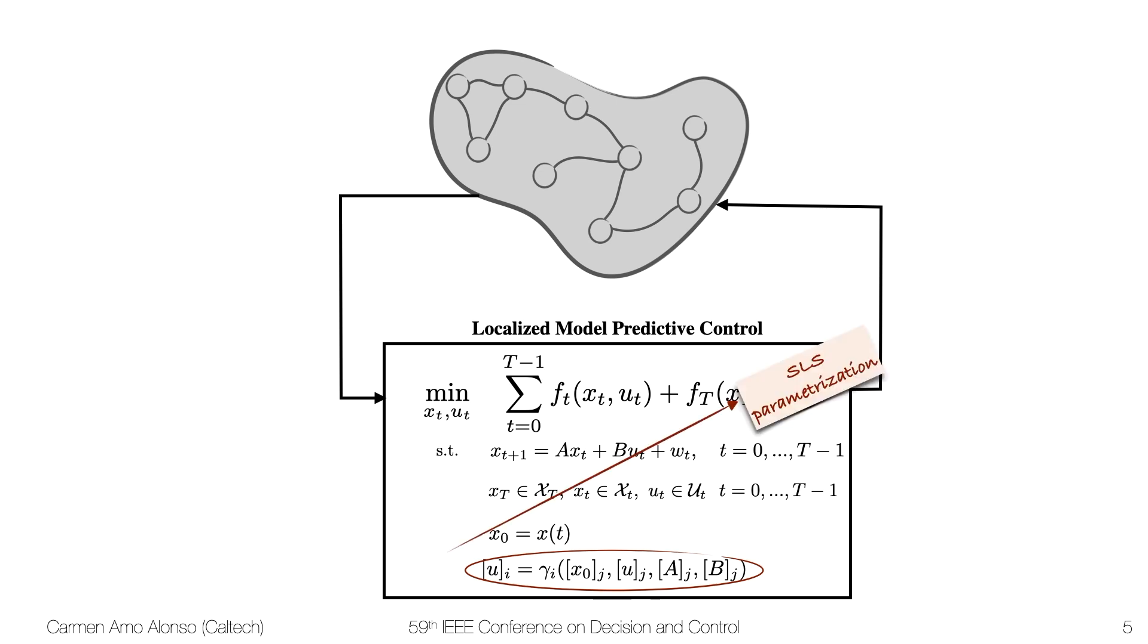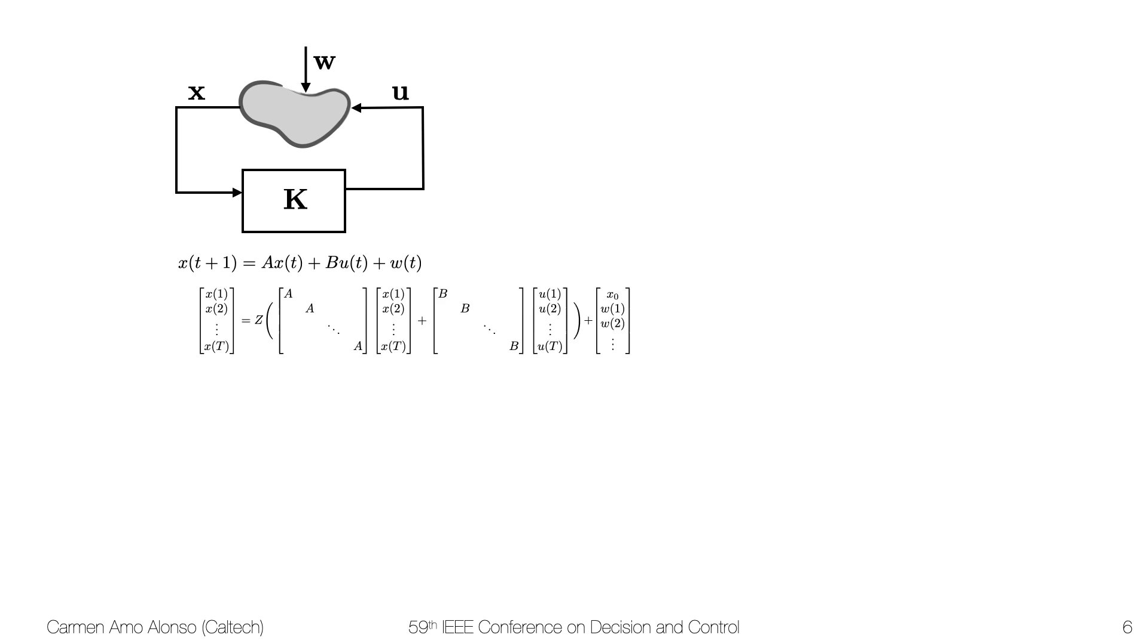To tackle this problem, we're going to use the system-level synthesis parameterization. In case anyone is interested in SLS, this tutorial paper is a great place to start. Just as a very quick overview of SLS, if I have a linear system that I can describe with these dynamics, I might as well write them in this block form. This is an alternative way of writing dynamics.